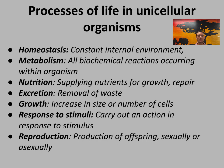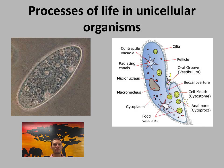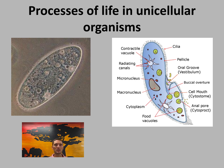Organisms must also have the ability to reproduce — the production of offspring through sexual or asexual reproduction. Two examples of single-celled organisms that carry out all of these functions: the first is a paramecium, a unicellular organism found in pond water.